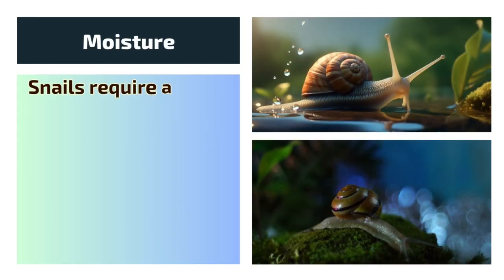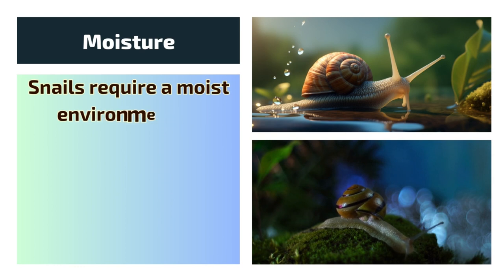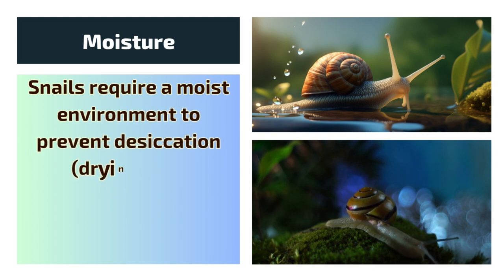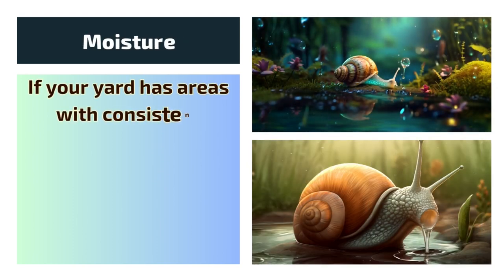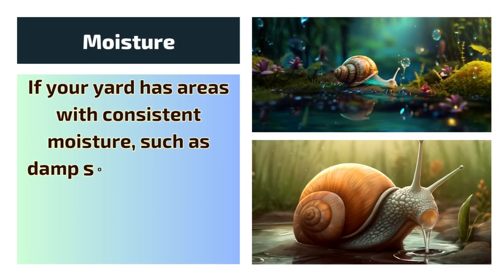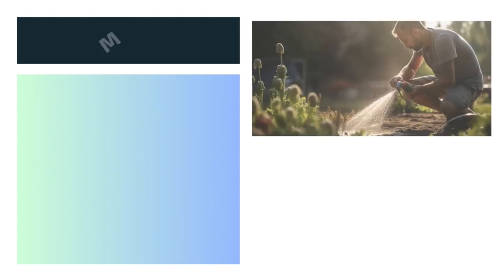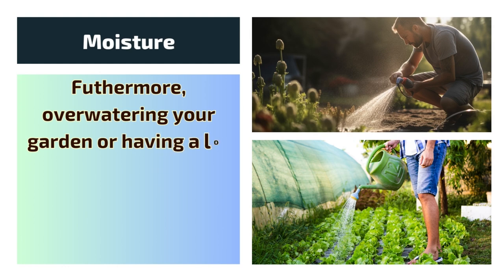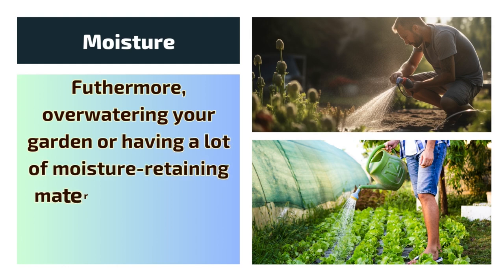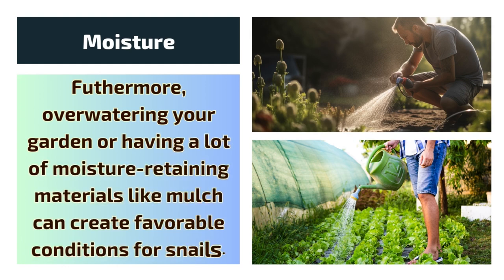1. Moisture. Snails require a moist environment to prevent desiccation — drying out. If your yard has areas with consistent moisture, such as damp soil, puddles, or over-watered plants, it can be inviting to snails. Furthermore, over-watering your garden or having a lot of moisture-retaining materials like mulch can create favorable conditions for snails.